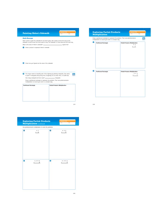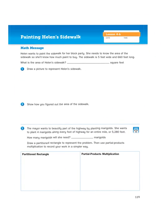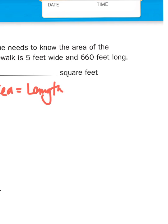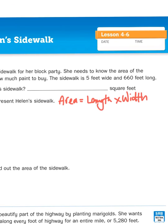Let's take a look at the math message on page 119. It says Helen wants to paint the sidewalk for her block party. She needs to know the area of the sidewalk so she'll know how much paint to buy. The sidewalk is 5 feet wide and 660 feet long. What is the area of Helen's sidewalk? As a reminder, the formula for figuring out the area of a rectangle is length times width. So we know that the length of this sidewalk is 660 feet by 5 feet. So we're going to multiply 660 times 5.